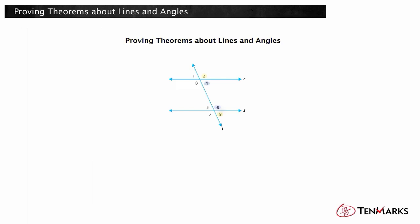Corresponding angles, such as angles 1 and 5, alternate interior angles, such as angles 3 and 6, and alternate exterior angles, such as angles 1 and 8, are congruent. When two angles are congruent, their measures are equal.